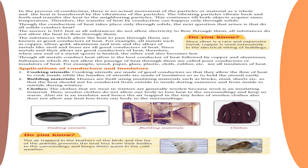During winter we wear woolen clothes. Wool fibers have more spaces between them than cotton, and these spaces get filled with air, which is a bad conductor of heat. Being insulators, both wool and air together prevent body heat from escaping. Similarly, jute and sawdust are bad conductors of heat; we cover ice with jute cloth or sawdust to prevent it from gaining heat from the surroundings and melting.